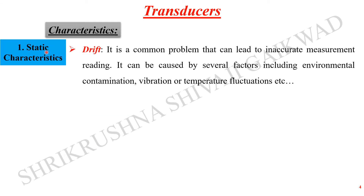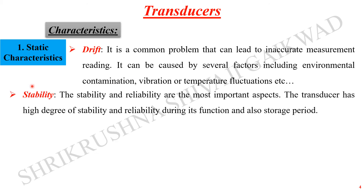The next static characteristic is drift. Drift is the gradual deviation of the instrument reading over time. It is a common problem that leads to inaccurate measurement readings and can be caused by several factors including environmental contamination, vibrations, or temperature fluctuations.